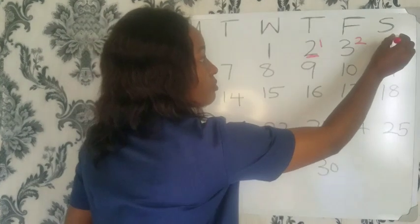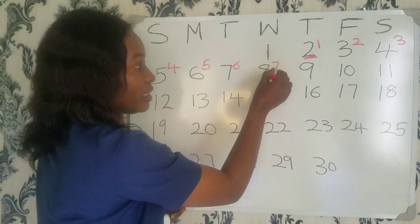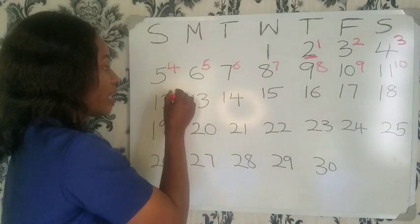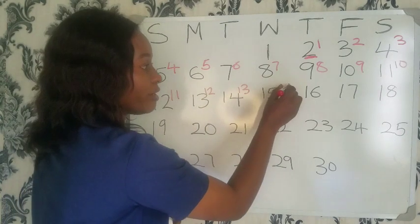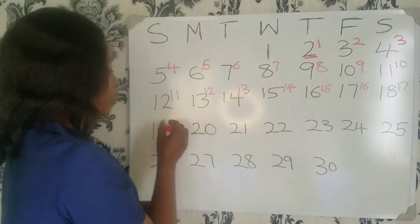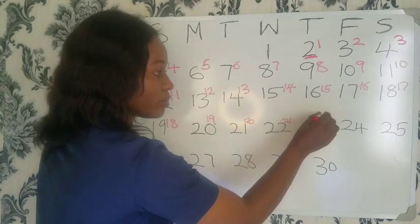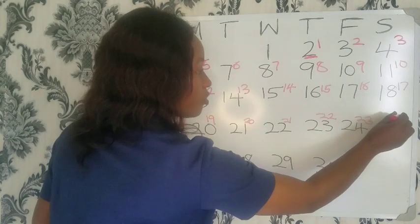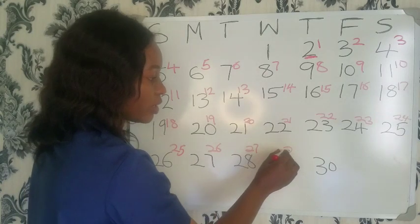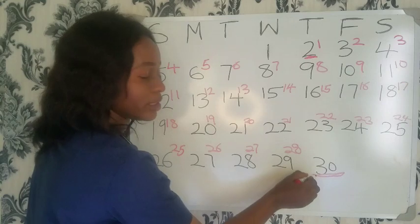From day 1 you continue counting: day 2, day 3, day 4, day 5, and so on through day 25, day 26, day 27, day 28. Let's assume you started seeing your next period on the 30th of November.